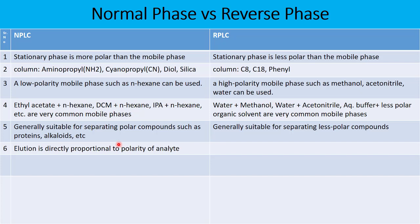In normal phase, elution order is directly proportional to the polarity of the analyte — the retention time of the analyte is proportional to its own polarity. The more polar the compound, the greater its retention in normal phase liquid chromatography, and the less polar the compound, the less its retention.